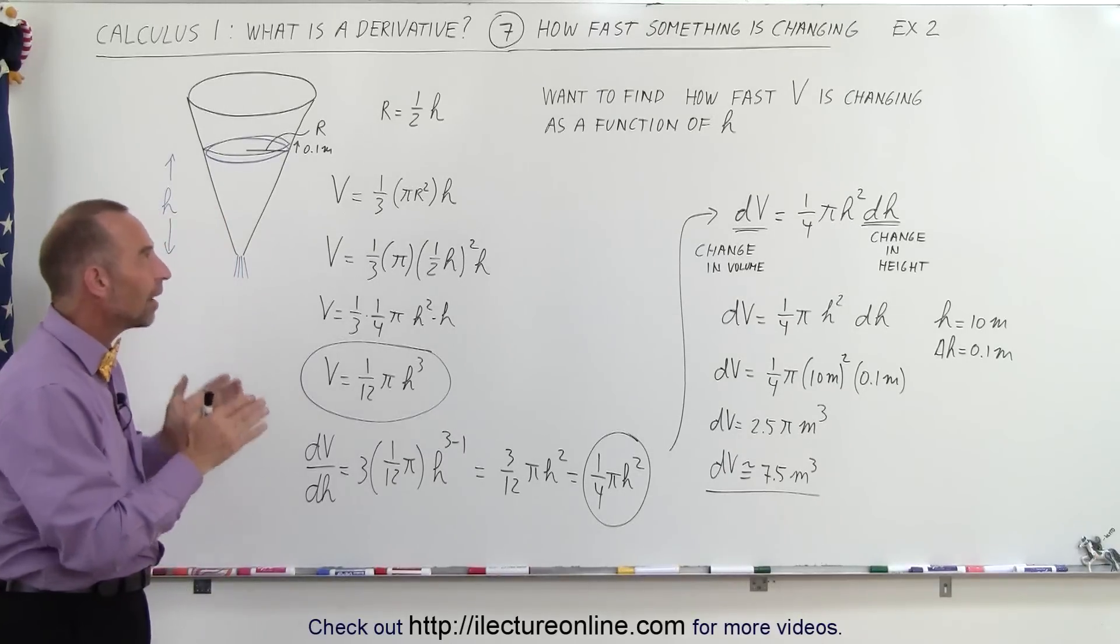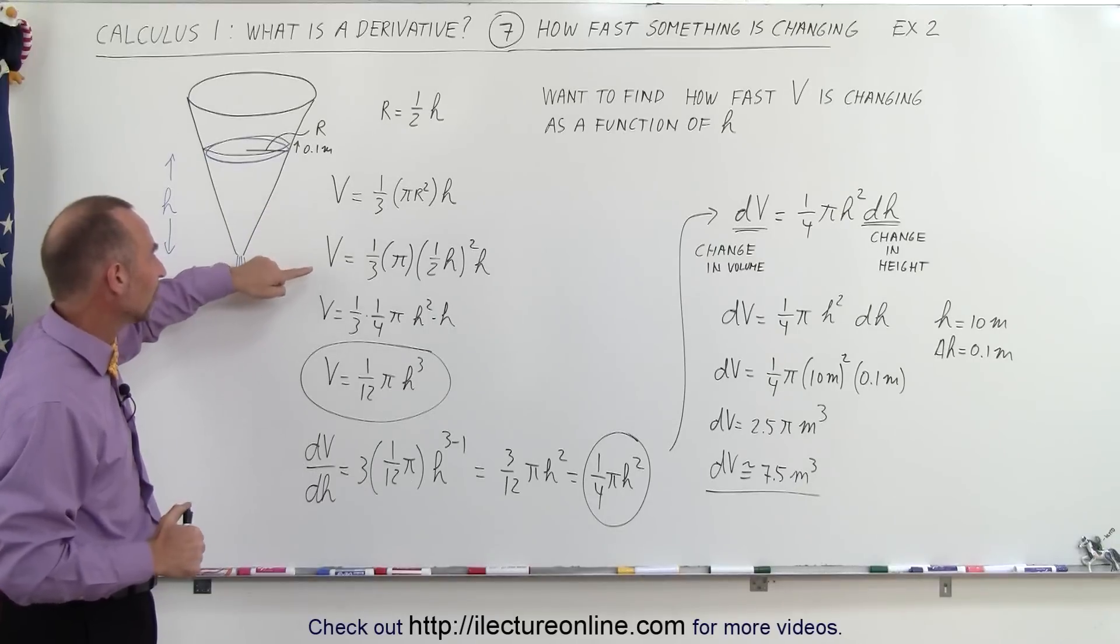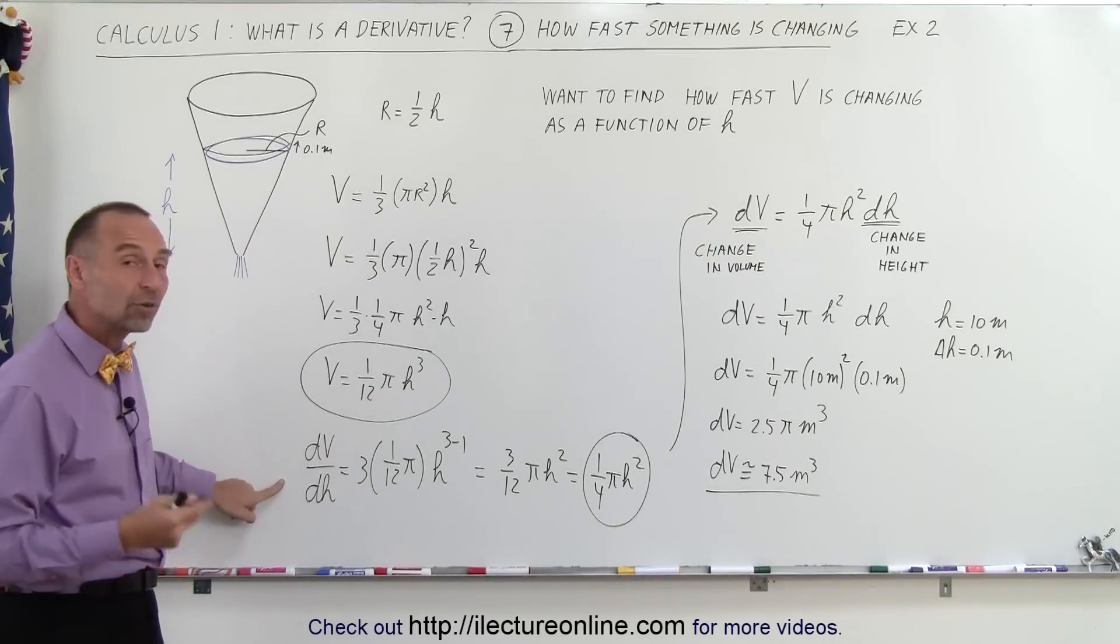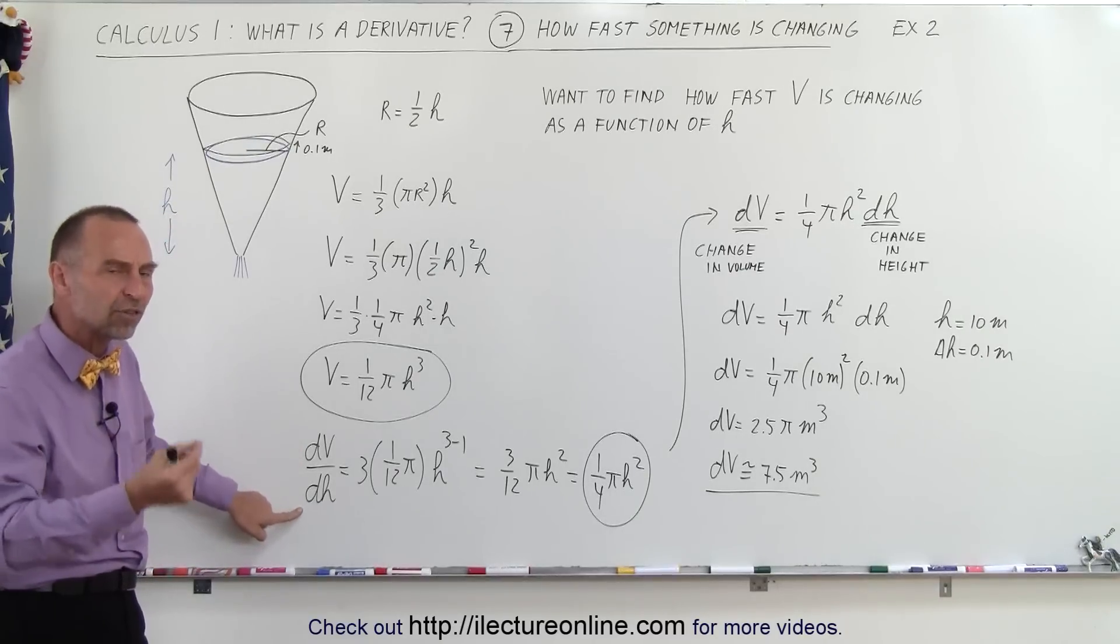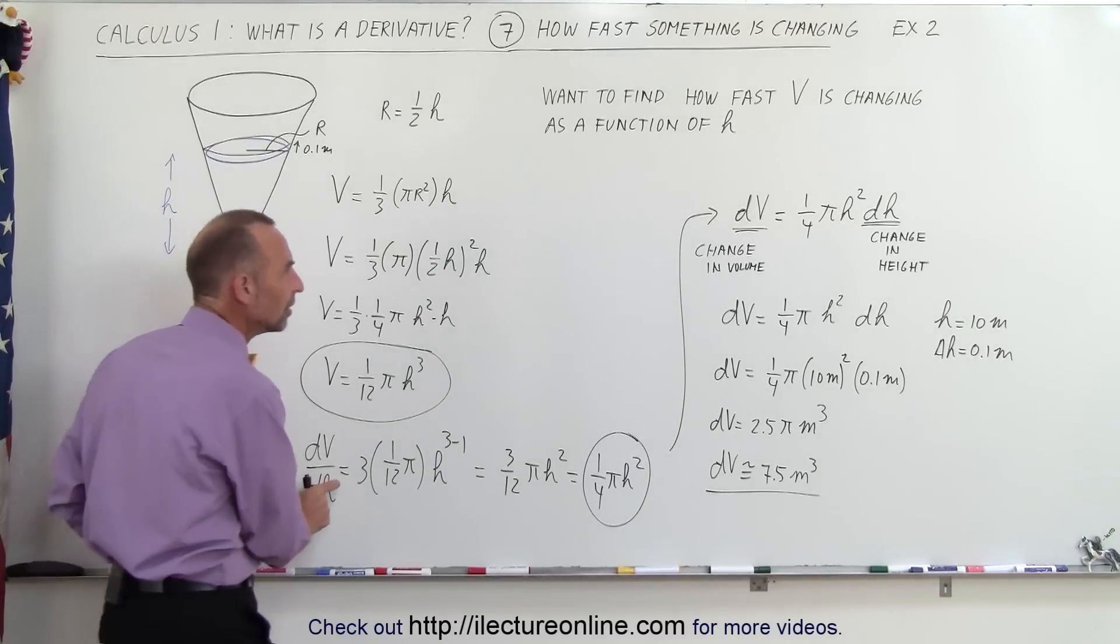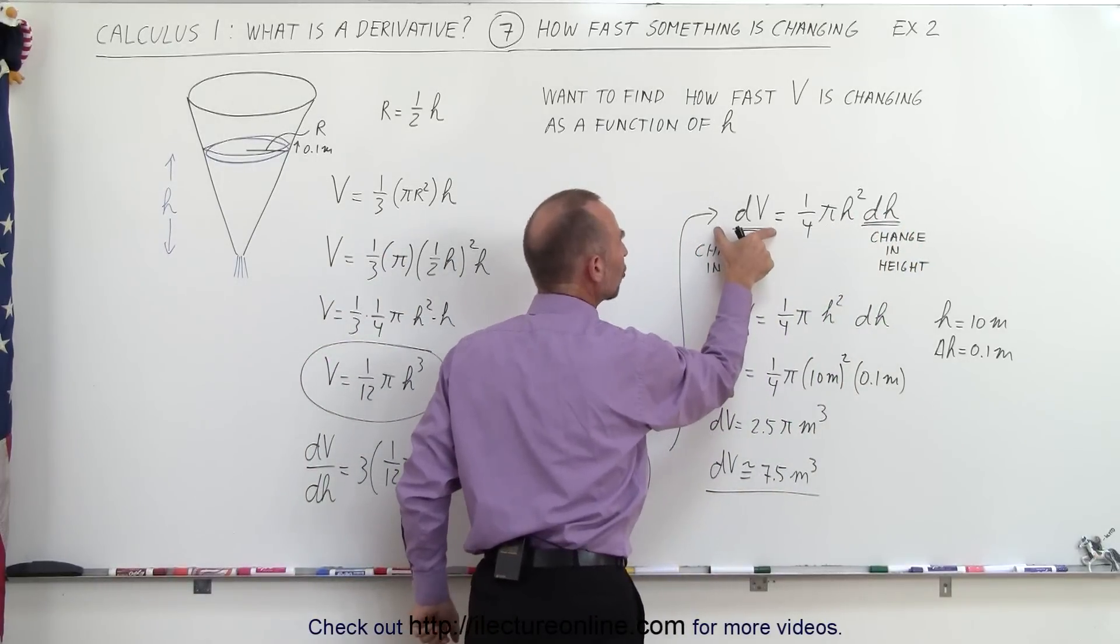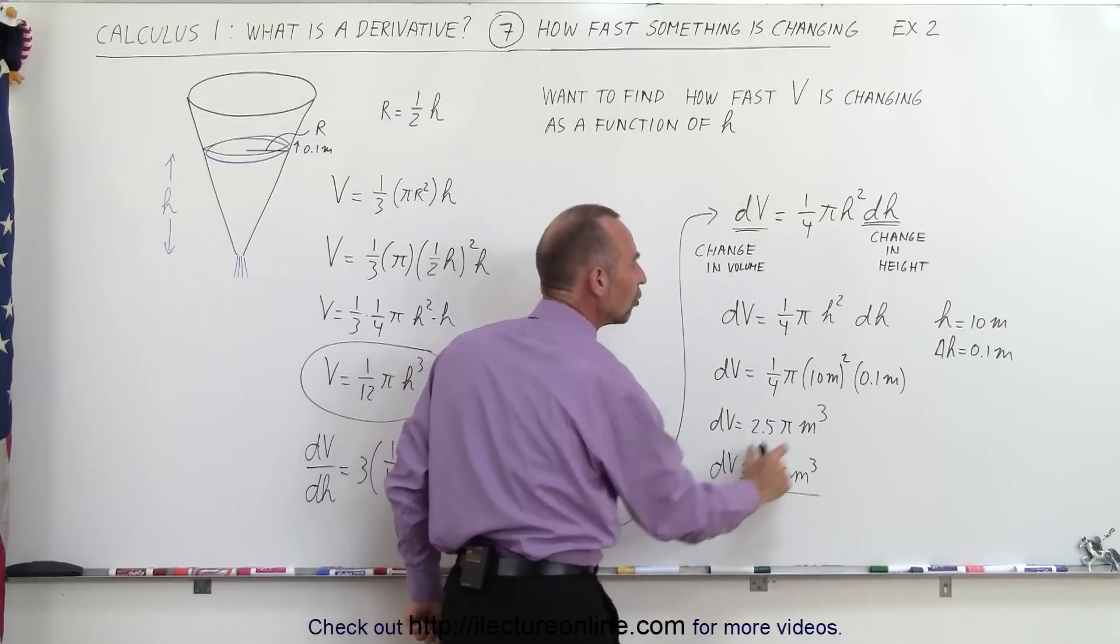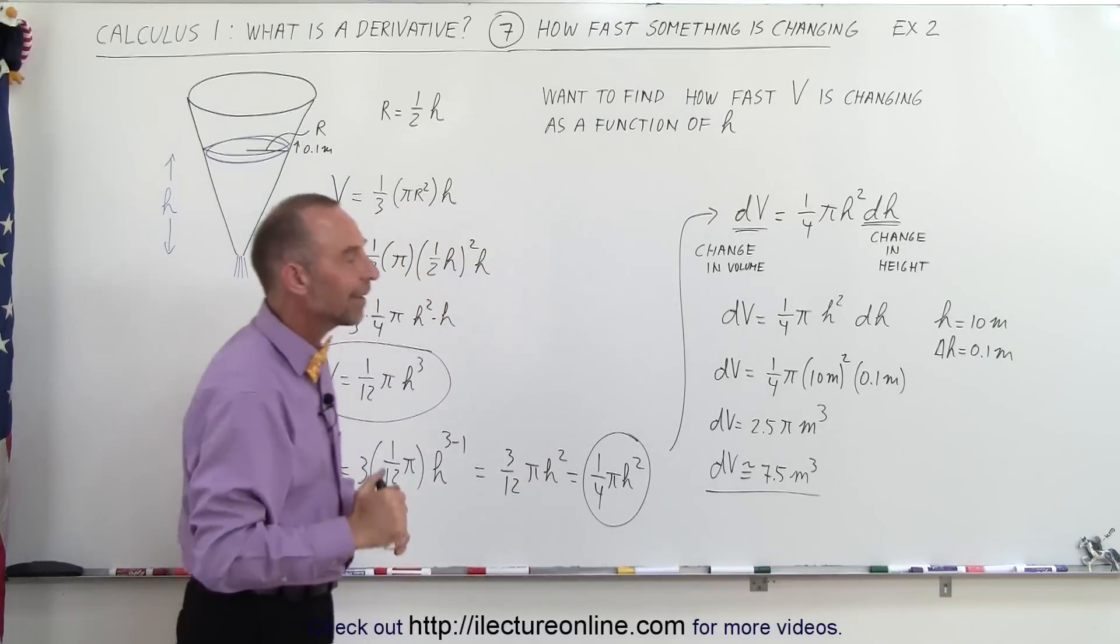So therefore you can see how nice we can use derivatives. We have a function that represents the volume as a function of height. Then we take the derivative of that, which gives us the change in volume with respect to height. That's what we mean by respect to. If we then move the dh to the other side, which represents a change in the height, and this represents a change in the volume, we can actually calculate how much the volume changes when the height changes at a particular point when the height was 10 meters.